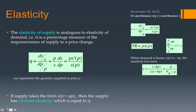Similarly, if the supply function takes the form S(P) = A · P^(eta), where eta is the elasticity appearing as the exponent with P, then the supply will have constant elasticity equal to eta. This mirrors the constant elasticity demand case, where demand took the form A · P^(−epsilon).